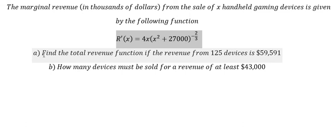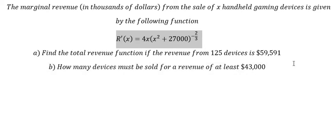Question A: Find the total revenue function if the revenue from 125 devices is 59,591. B: How many devices must be sold for a revenue of at least 43,000?